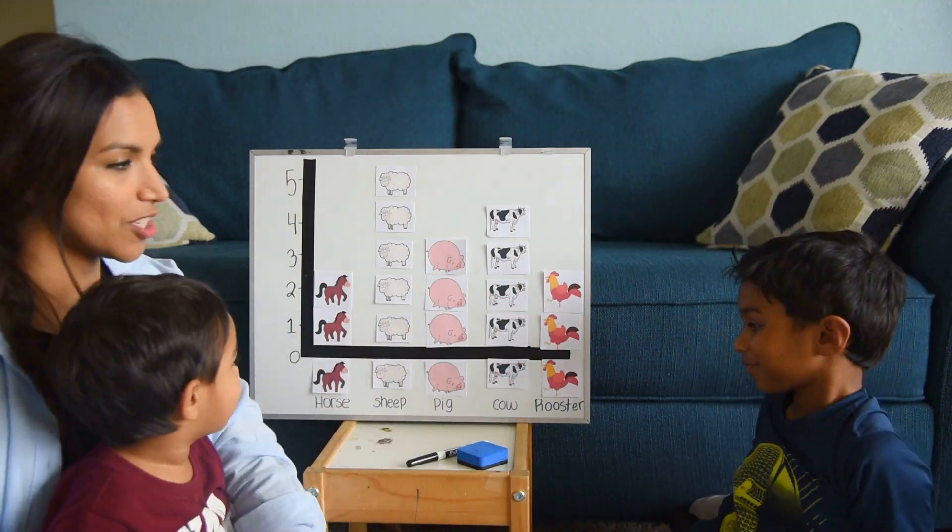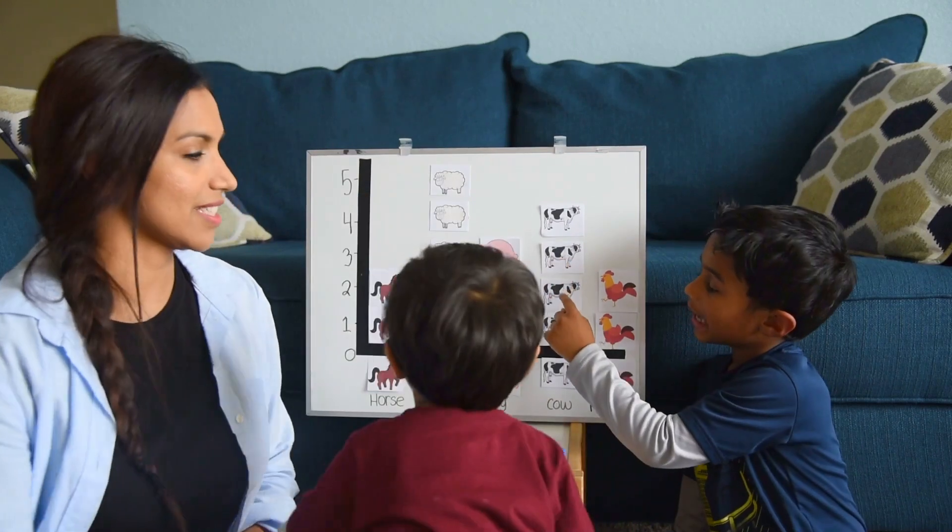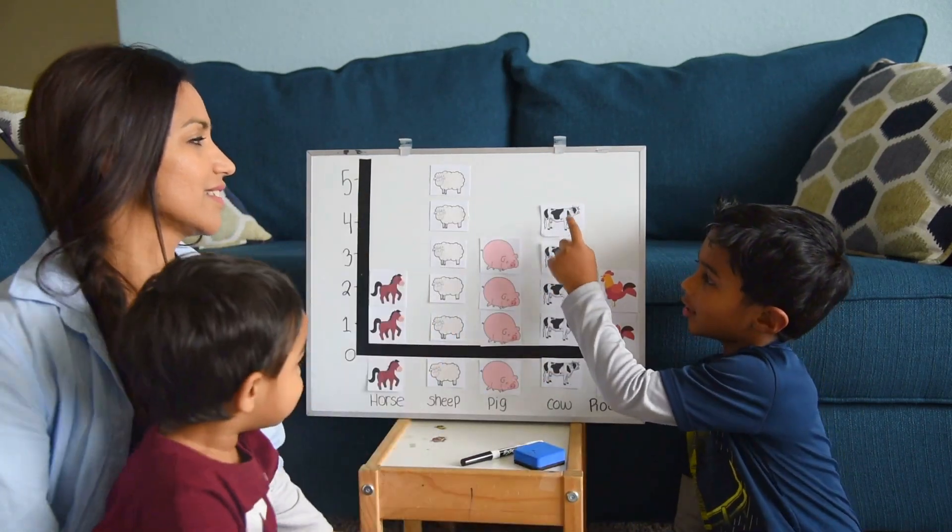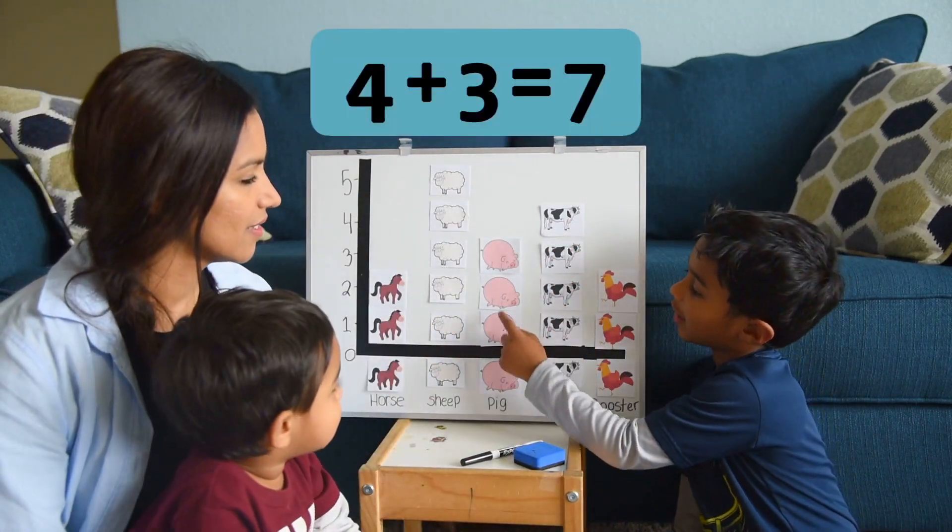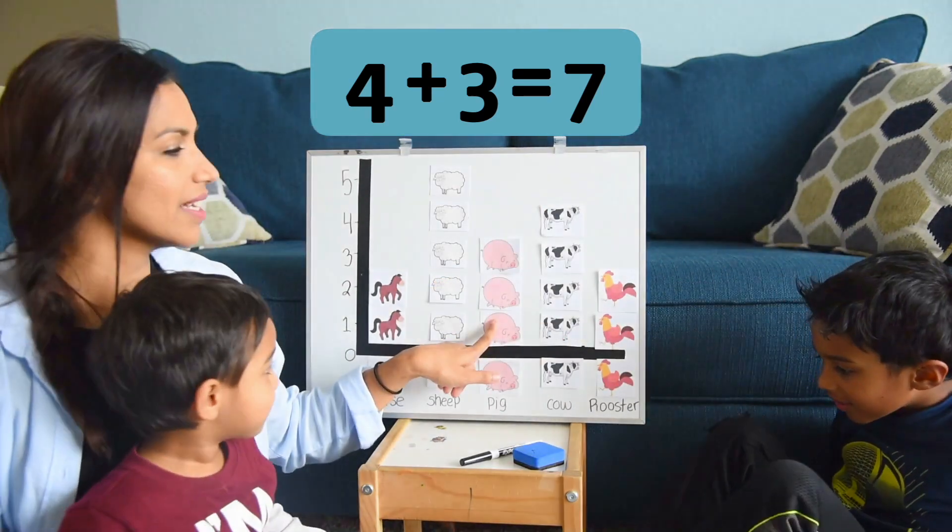Now are you ready for a question? How many cows and pigs are there in all? So what do you think you're going to do? Four cows and three pigs in all. Are you adding or subtracting? Adding. One, two, three, four, five, six, seven. The answer is seven. It's four plus three is seven.